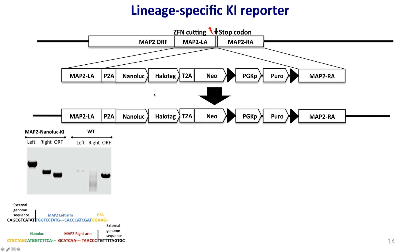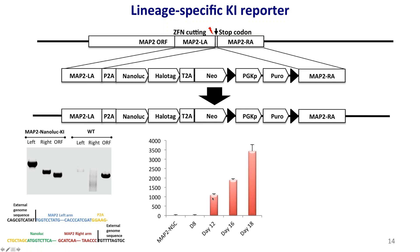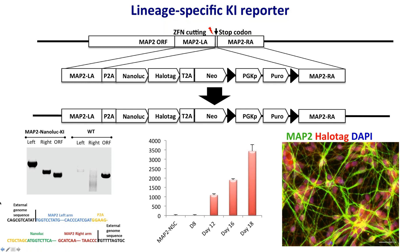We then differentiated this line into neural stem cells and further into neurons. Once the cells differentiate into neurons, we measure luciferase activity using NanoLuc and see increased luciferase activity as the cells become neurons, indicating the reporter reflects MAP2 gene expression. To confirm 100%, we also used the HaloTag reporter — you add a ligand to the cell culture and examine HaloTag expression, which is 100% co-localized with MAP2 expression.